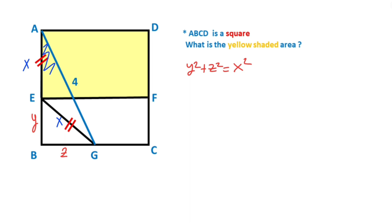And then if you focus on triangle ABG, we can also apply Pythagorean theorem for this triangle. Therefore, X plus Y squared plus Z squared equals 4 squared.